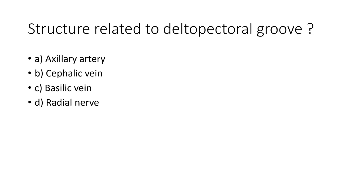I have got a question for you guys: which structure is related to the deltopectoral group — axillary artery, cephalic vein, basilic vein, or radial nerve? Pause and try to answer this question.